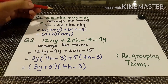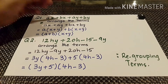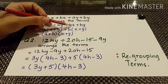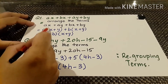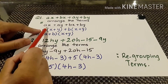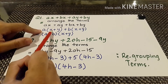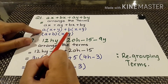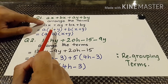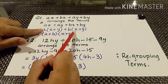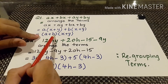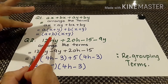Question number 1 states: ax plus bx plus ay plus by. We will rearrange the terms as ax plus ay plus bx plus by. Now the 2 groups are ax plus ay and bx plus by. From the first group we take a as common, leaving x plus y. From the second group we take b as common, leaving x plus y. By rearranging the terms it is simple to find the factors — x plus y and a plus b.